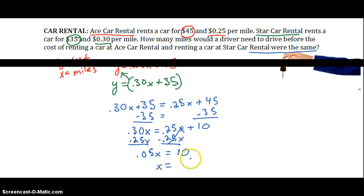Divide each side by 0.05, and we get x equals 200. So when x equals 200, our equations are the same. So what we're saying is, when we go 200 miles, the cost of renting a car is the same at both places. So our final answer is going to be x equals 200 miles.